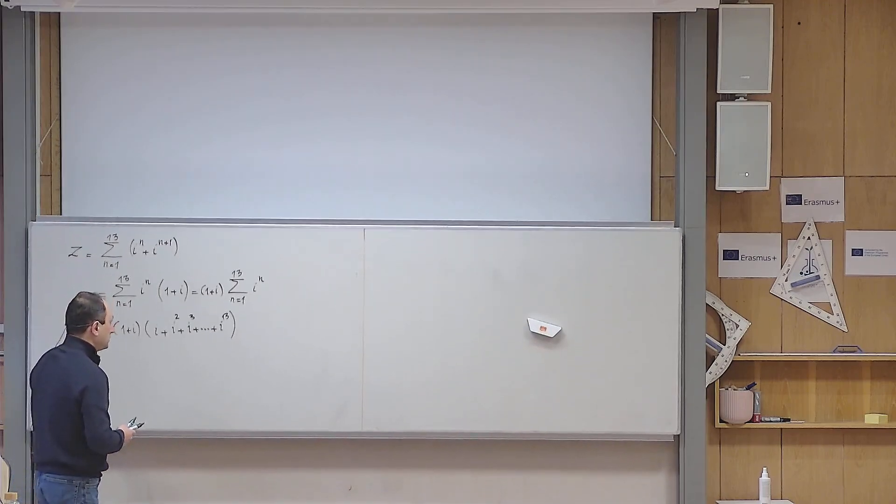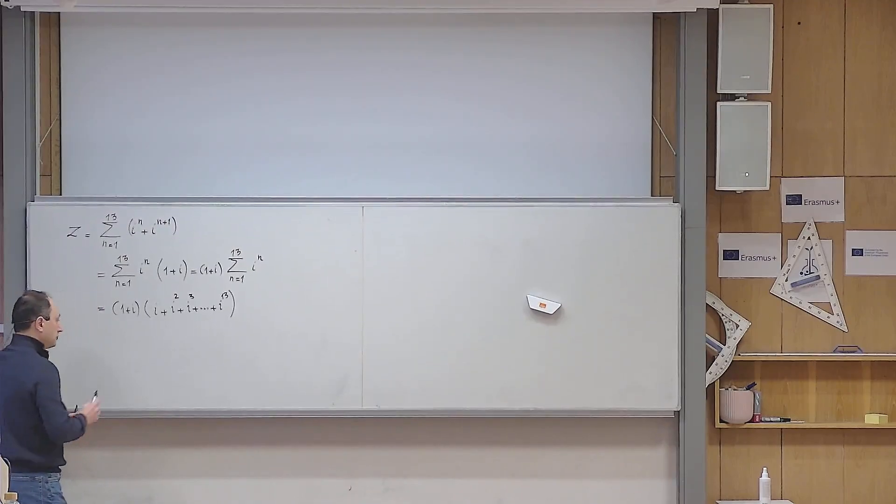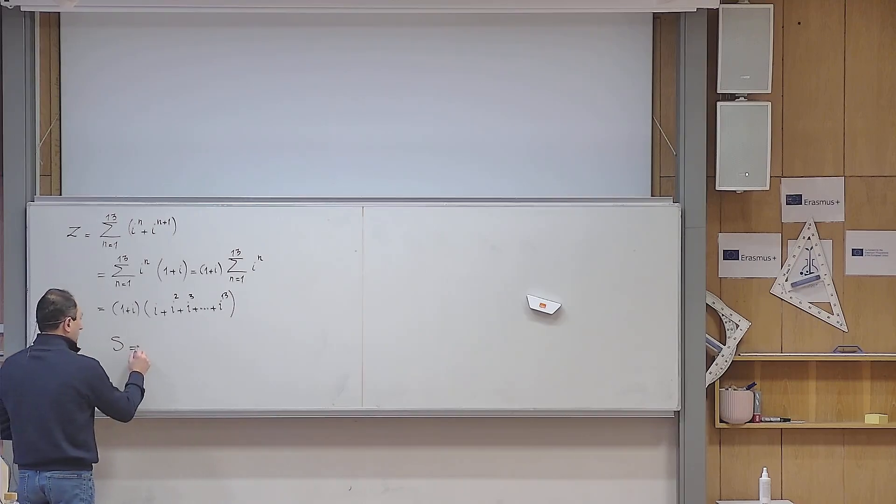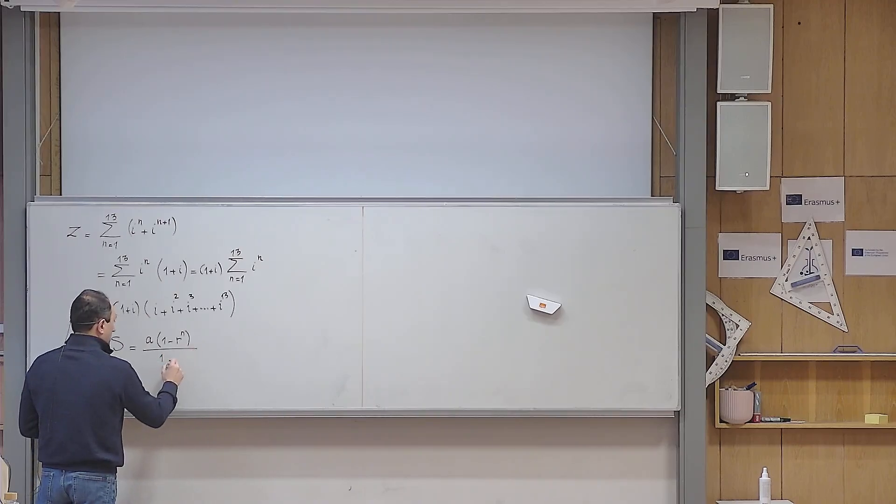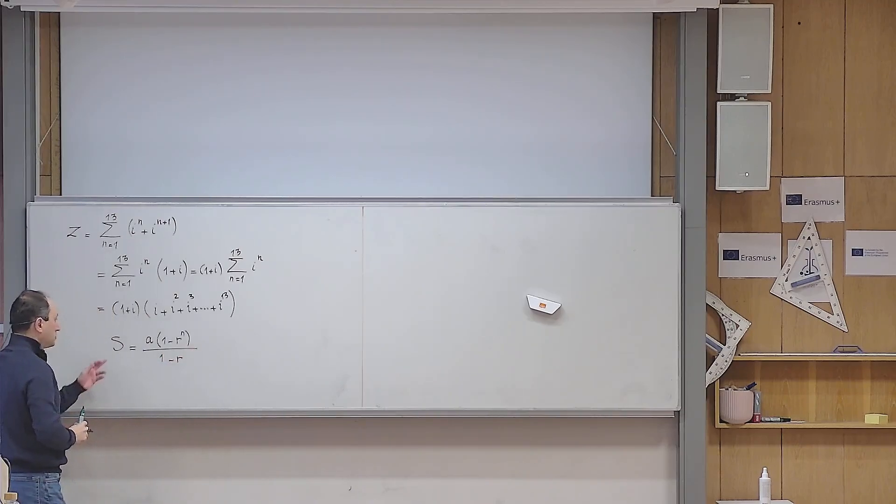So if you use the formula for the sum of a geometric progression, which I will write here: s is equal to the first term a times 1 minus r the common ratio to power n divided by 1 minus r. I will use this formula.